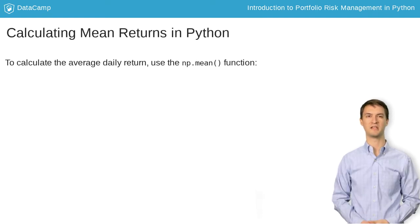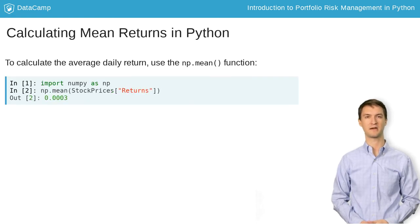You can use Python to estimate the moments of a return distribution. To calculate the average daily return of an asset, or mu, assuming you have already calculated daily returns, simply use NumPy's mean function to compute the average.